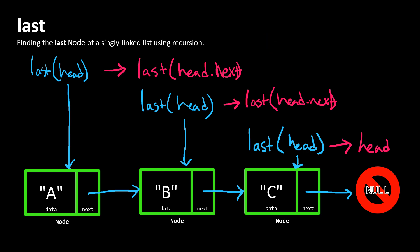And so this is how you would think about solving this problem using recursion. Our recursive case is when the next property of a node is not null, and our base case is when the next property is null.